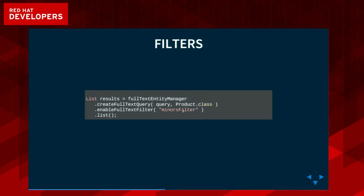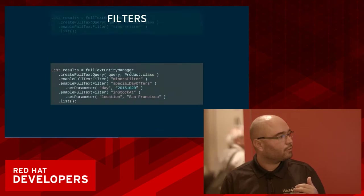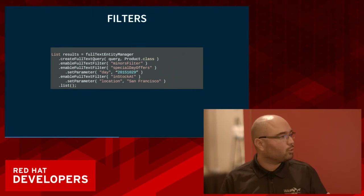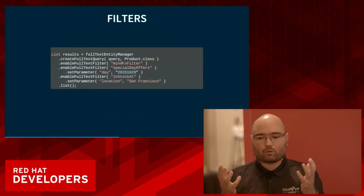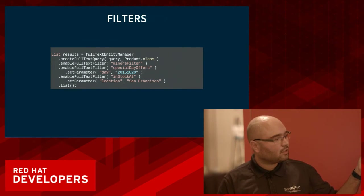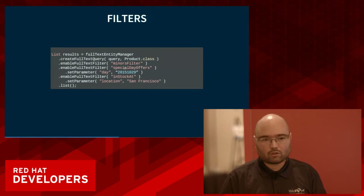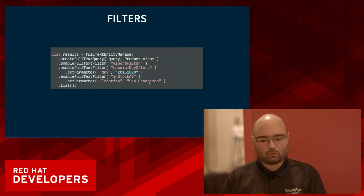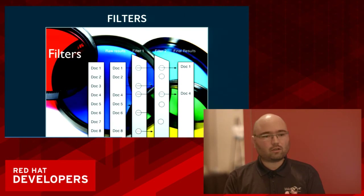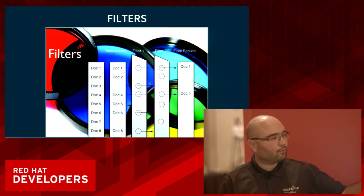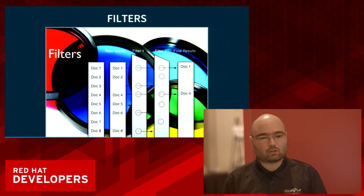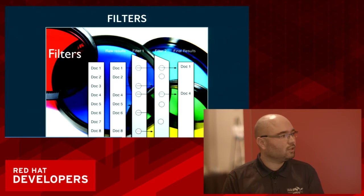You can also specify filters — in a declarative way or programmatically — which are very efficient for stacking different restrictions on top of your queries. You could have a query parsing user input, but then add additional restrictions on top: show special offers of the day, or things that are in stock today in San Francisco. These things are all measured together in bit sets at the Lucene level on the index.